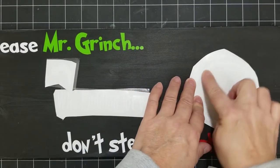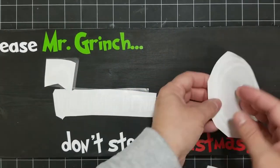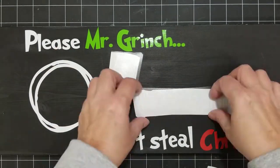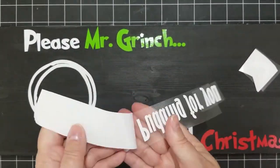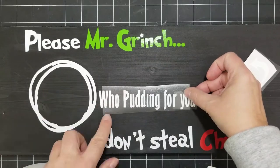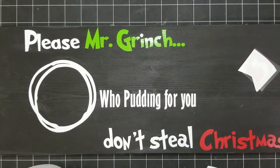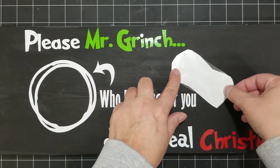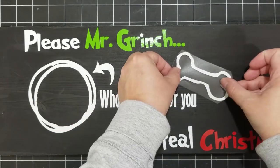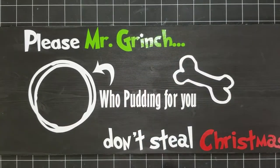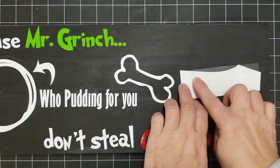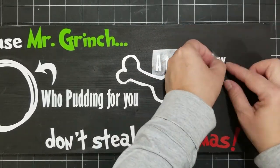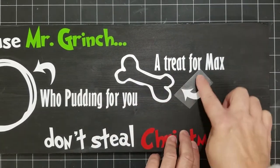Okay so now I can start putting down the design for his snacks. So that's where the bowl of pudding will go and then can't leave a snack for Grinch without leaving a snack for his dog Max. So a little dog bone and then an arrow for that one.